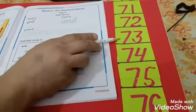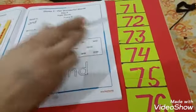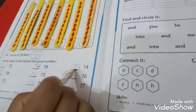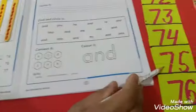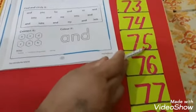Next number is 74. Which number comes before 74? It's 73. We will write here 73. Next number is 76. Which number comes before 76? It's 75. We will write here 75.